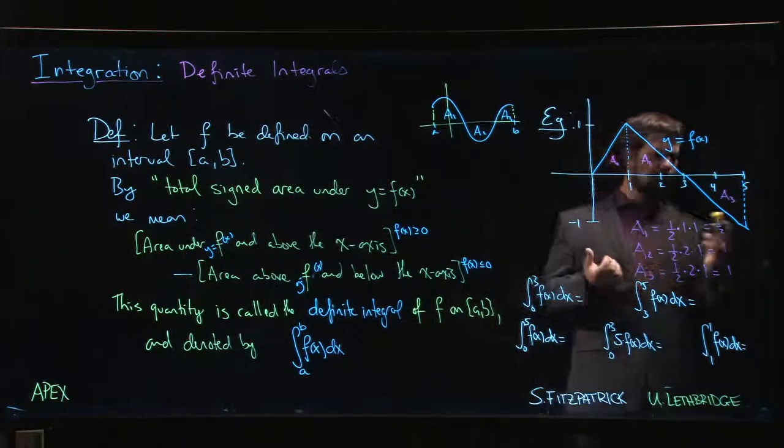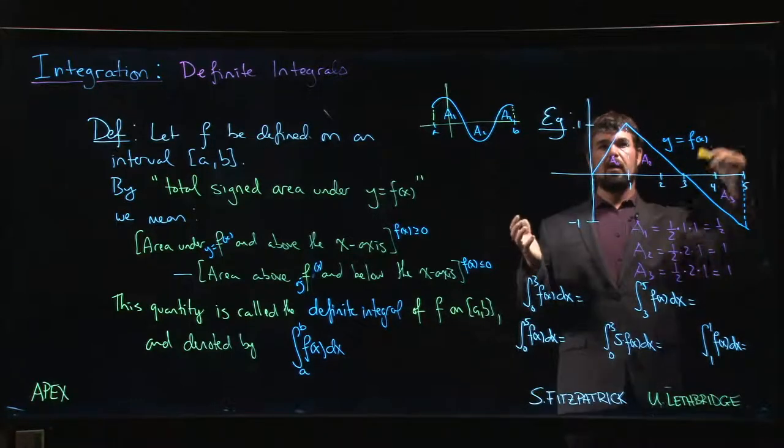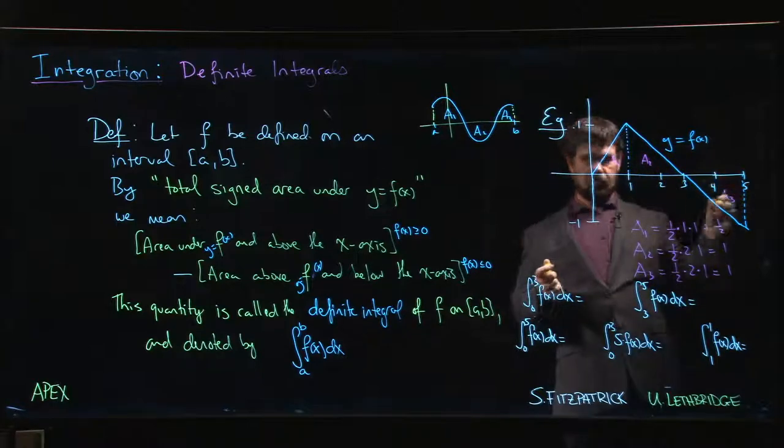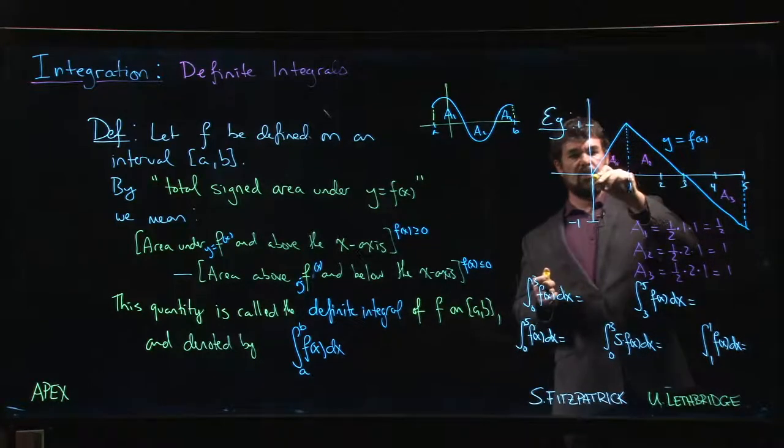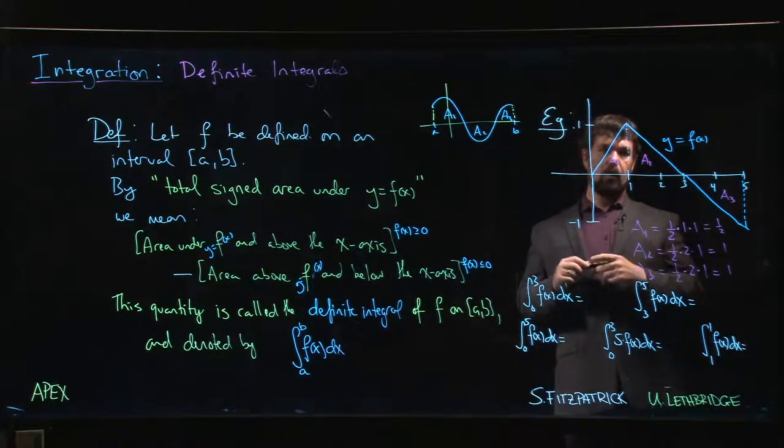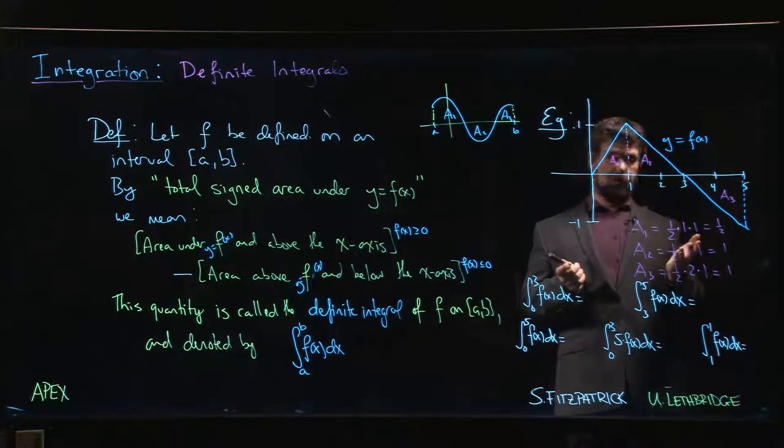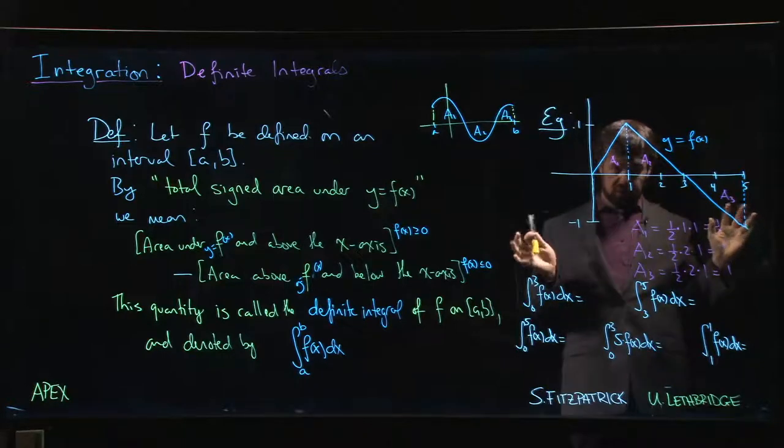So the particular function that we have here is this piecewise linear function. So we have just simply, I mean, we could work out what the equations are. This is just y equals x going from 0 to 1, and then we have this line here with negative slope. We could work that out if we wanted to, but we don't really need to.